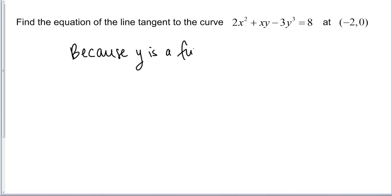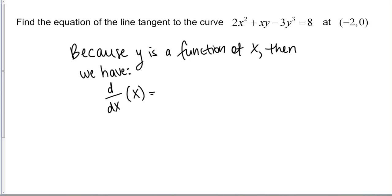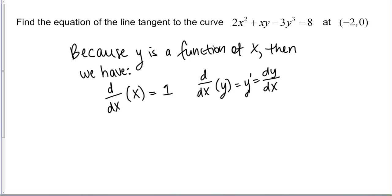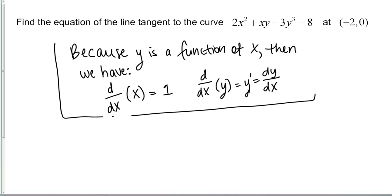Because y is a function of x — this is an implicit relationship but we're still thinking of y as a function of x — we have two facts. One you already know: the derivative with respect to x of x just equals 1. But the derivative with respect to x of y is not just 1. Because we're thinking of y as a function of x, it equals either y prime or dy/dx. I'm going to use the dy/dx notation here.